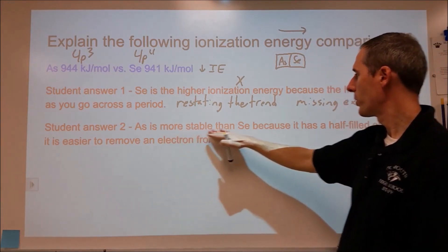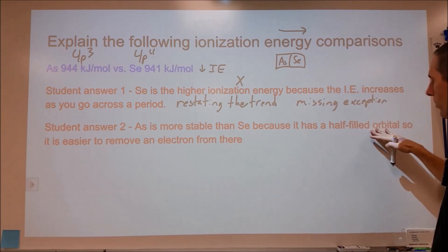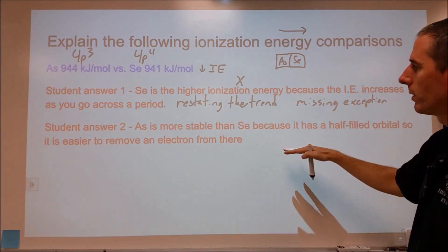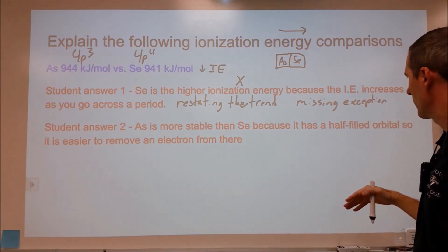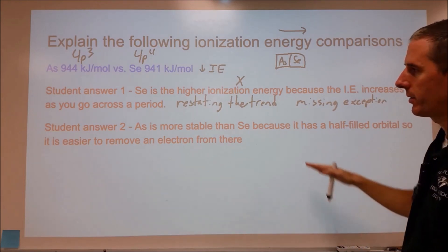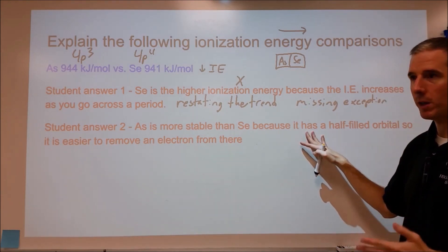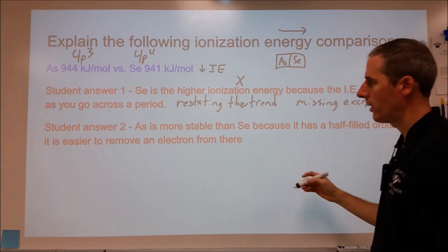Student 2 says arsenic is more stable than selenium because it has a half-filled orbital, so it is easier to remove an electron from there. So it's always good when you're doing answers like this that the more specific you can be, the better.